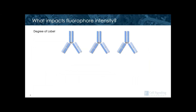Another consideration when thinking about fluorophores is how bright they are. The first thing that impacts fluorophore brightness is how many fluorophores you are working with. When working with fluorophores conjugated to an antibody, it is possible to have different numbers of fluorophores attached to the antibody. More is brighter, but there's a point where too many fluorophores could change the behavior of the antibody or cause self-quenching. So it's important to find the point where there are some fluorophores conjugated, but that the antibody still performs as expected.